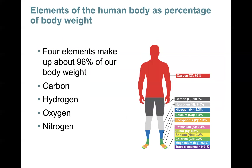In terms of the chemical elements essential for life, about 25 of them are going to be considered essential, but they exist in different percentages in our bodies. This illustration shows us the elements of the human body as a percentage of body weight. About four chemical elements make up about 96% of our body weight. Those four elements — jot these down — are carbon, hydrogen, oxygen, and nitrogen. About 96% of the mass of living things is made up of these four chemical elements.